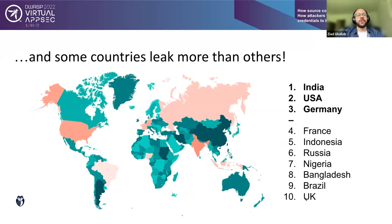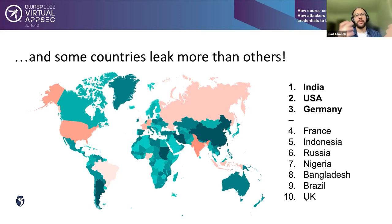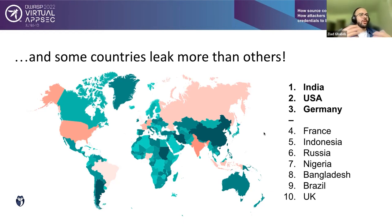Countries are not equal in total volume of leaked secrets. The top three were India, the USA, and Germany. This doesn't mean developers in those countries are worse at managing secrets — it reflects the volume of software development activity. When we divide the number of leaked secrets by the number of developers and total population, we see a constant ratio, meaning in terms of practices all developers are roughly equal.